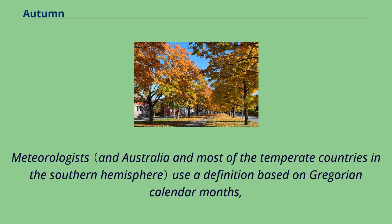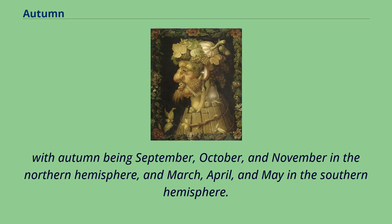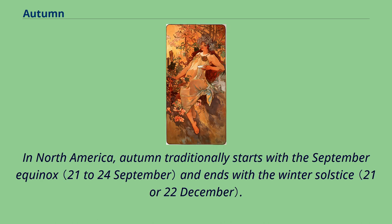Meteorologists use a definition based on Gregorian calendar months, with autumn being September, October, and November in the Northern Hemisphere, and March, April, and May in the Southern Hemisphere. In North America, autumn traditionally starts with the September equinox and ends with the winter solstice.